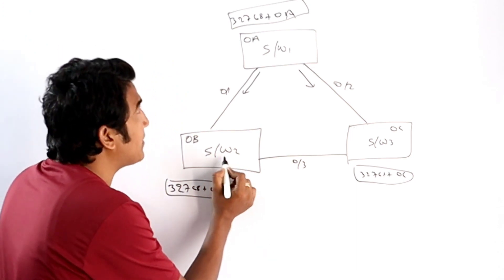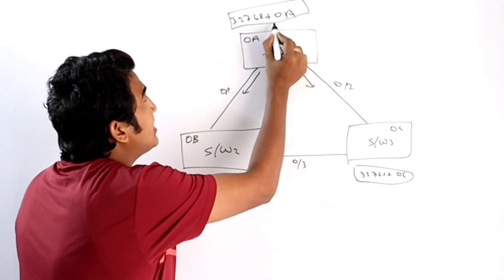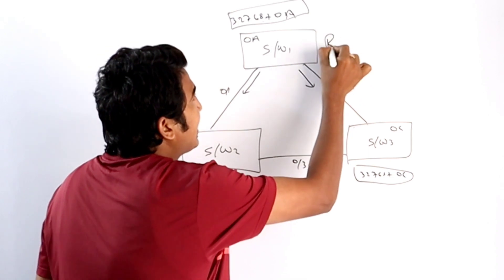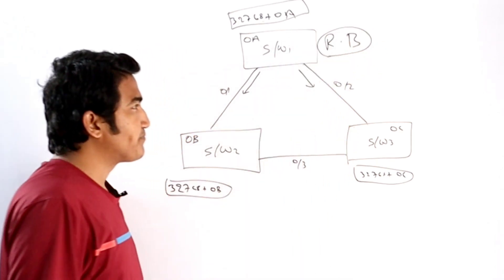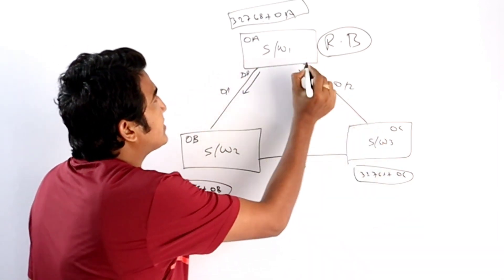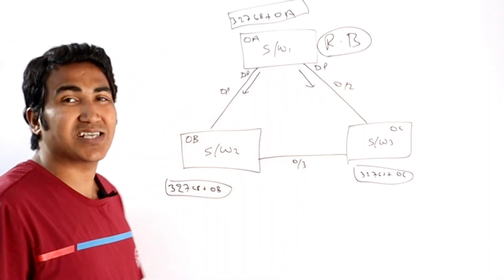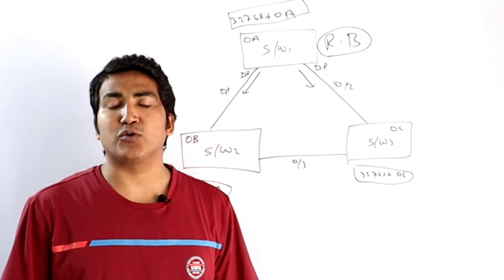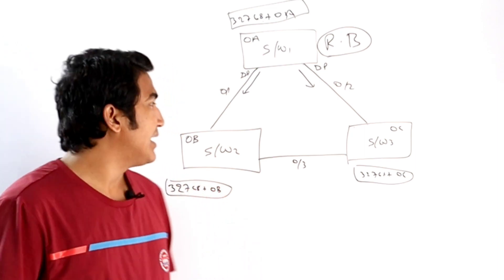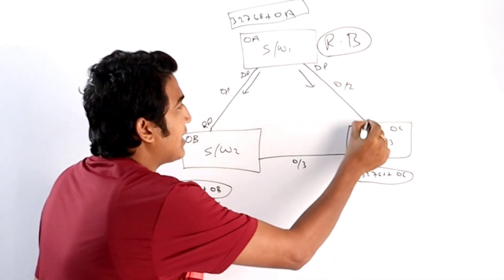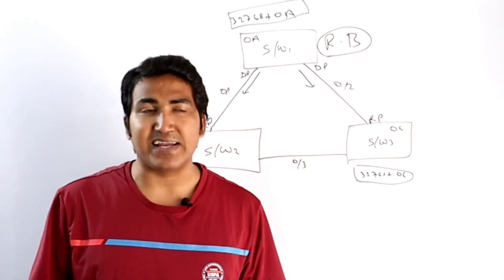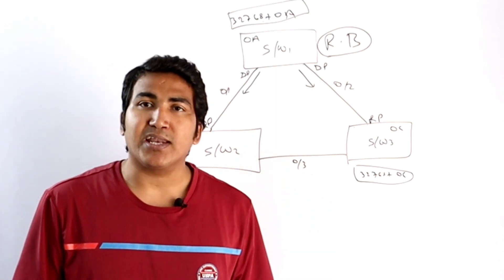Switch 1 has the lower bridge ID, so it becomes root bridge. The root bridge ID on switch 2 and switch 3 will point to switch 1. As you all know, all ports of the root bridge switch become designated ports, because DP is the port that transmits superior BPDUs, and the root bridge is the only switch that generates superior BPDUs. So all ports of switch 1 become DP. The other switches have root ports and, on the shared segment, one port becomes DP and one becomes alternate.